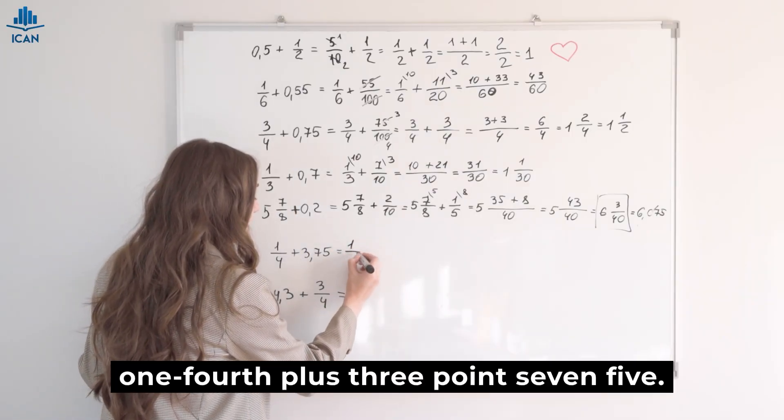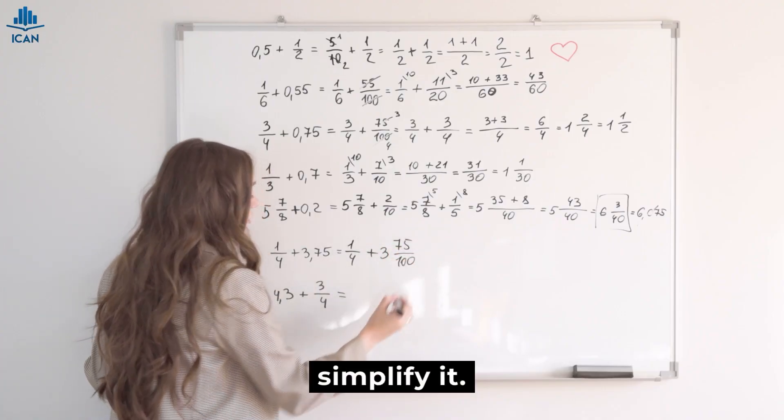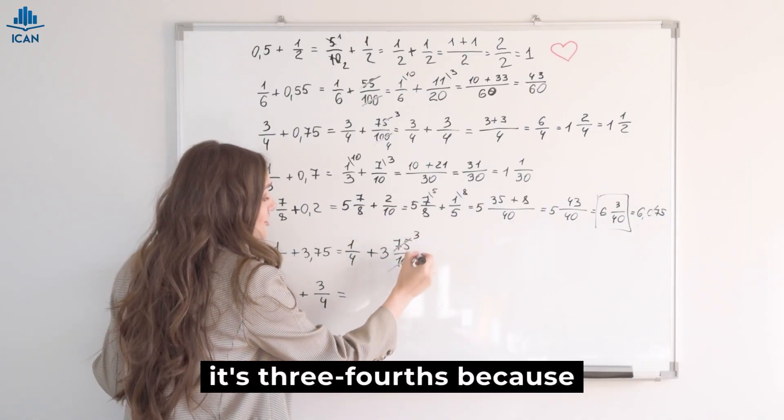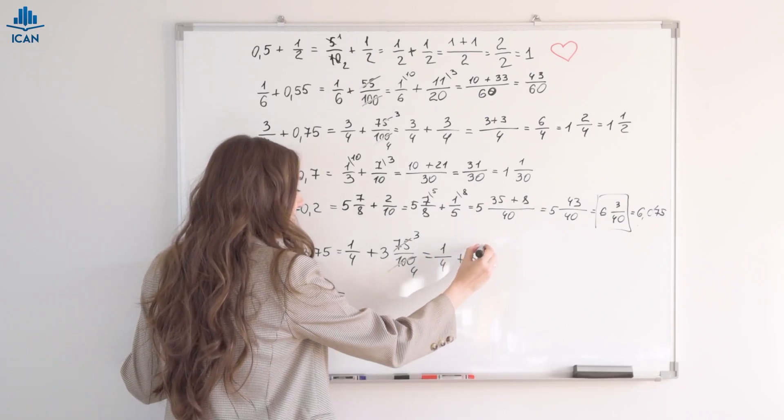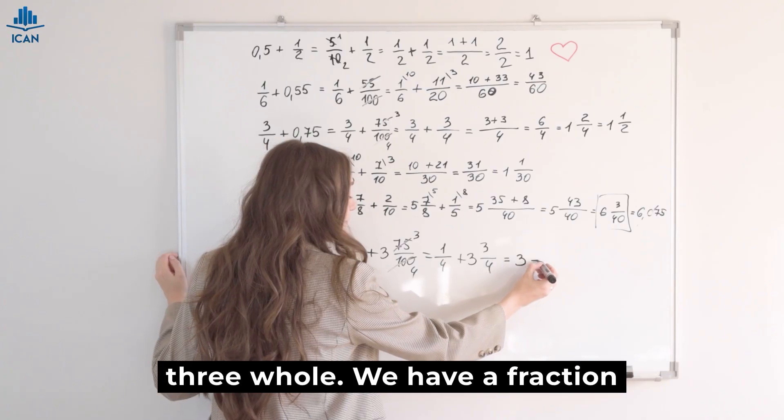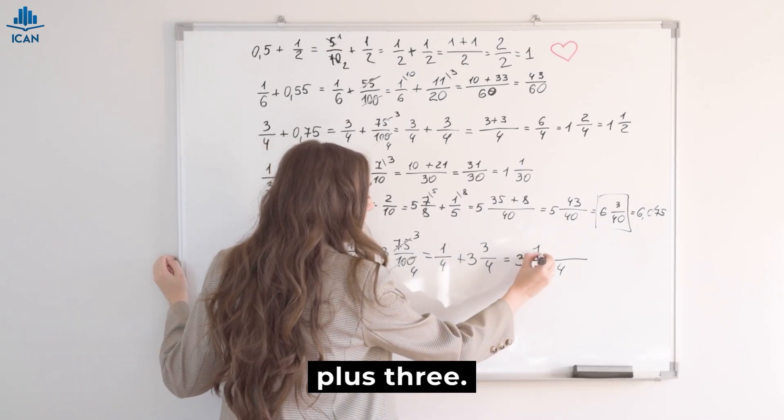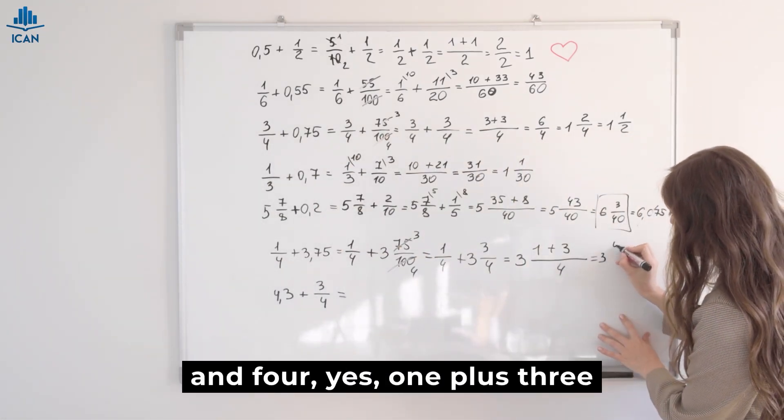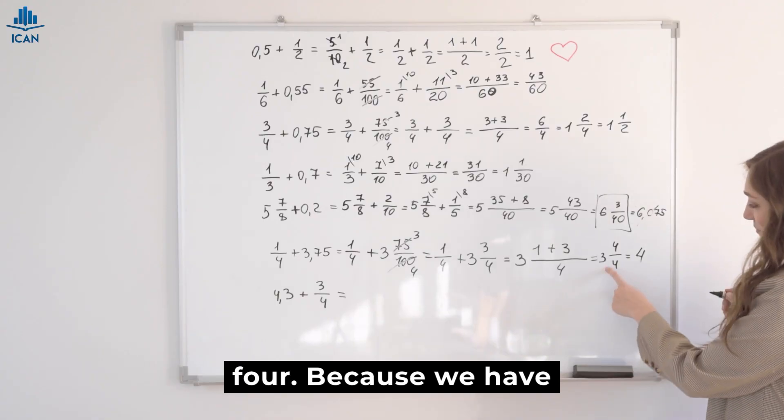Here, one-fourth plus 3.75. What are we doing? Like our example here, it's three-fourths because we're dividing by twenty-five. We get one-fourth plus three and three-fourths. Interesting. Let's see. It equals three whole. We have a fraction here. Same denominator. So we write it as the common denominator here. Here we get one plus three. What does that equal? Three and four, yes. One plus three is four-fourths. What does this mean? It's simply four because we have another whole one.